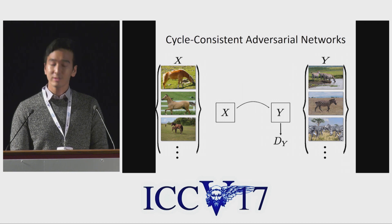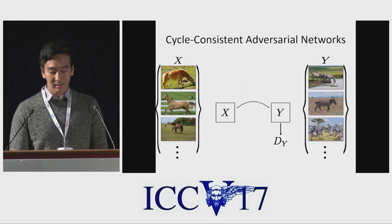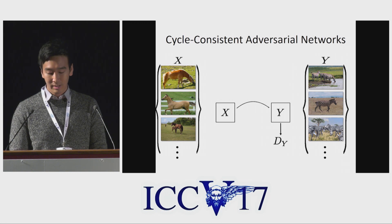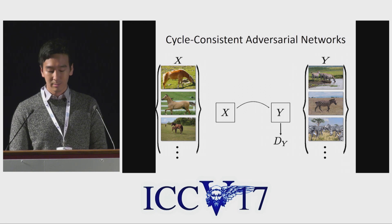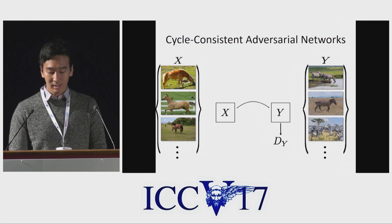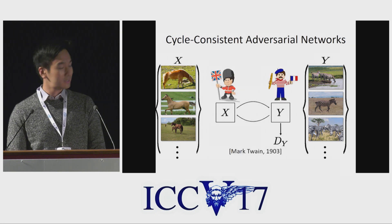Unfortunately, we observe the translator network often ignores the input image completely and keeps generating the same zebra from the target set. We need another constraint.